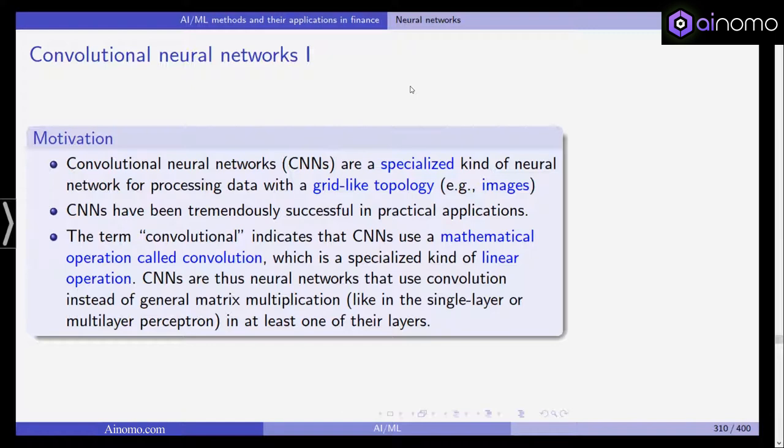We don't need to go into the details of what a convolution is in mathematics, but they are neural networks that use convolution instead of general matrix multiplication like in the single-layer or multilayer perceptron. Remember that the single and multilayer perceptron, if you leave out the sigmoid function and only look at the first layer and how the hidden units are combined, these are linear operations that are linearly combined to yield the output signals.